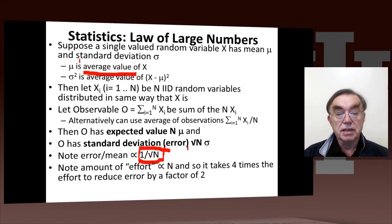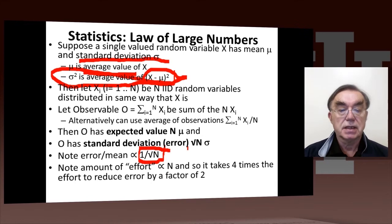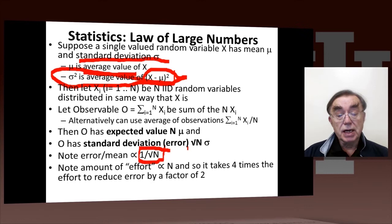We don't have to worry about it, just have an intuitive idea what error is. It's mathematically defined here as the square root of the average value of x minus mu squared, but we don't care about that. What counts is this: error over mean is 1 over square root of n. So if we take n events, 1 over the square root of n is square root of n. So if I observe n events, my error is square root of n. Very important result.